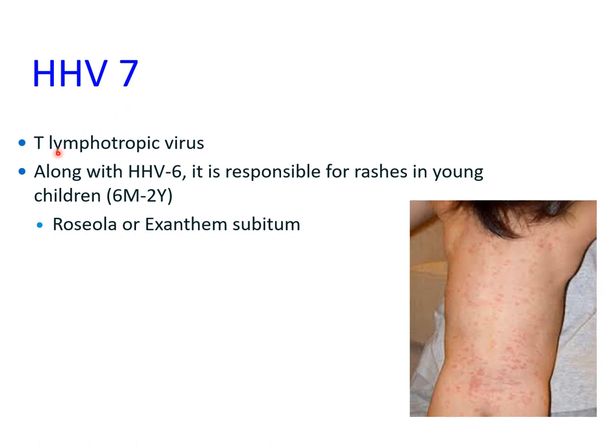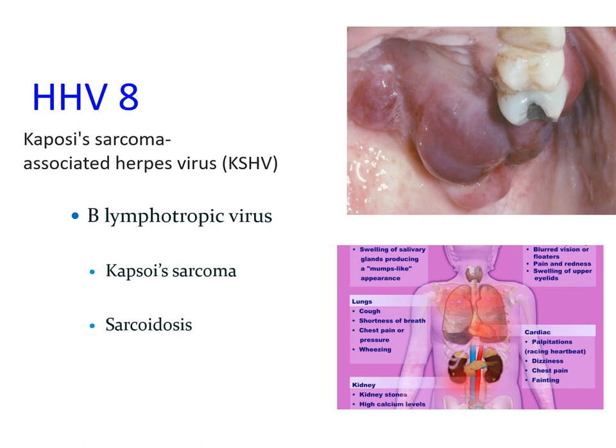Human herpes virus type 7 is a T-cell lymphotropic virus that resides in T lymphocytes. It doesn't have any classical manifestations on the face or oral cavity, but along with human herpes virus 6, it can lead to rashes in young children. These rashes may involve the dorsal aspect of the trunk, and the term roseola or exanthem subitum is used for this type of involvement following human herpes type 7 infection.